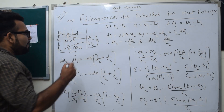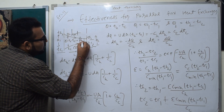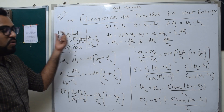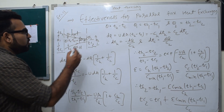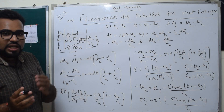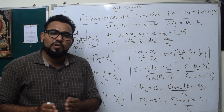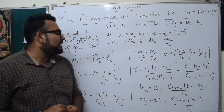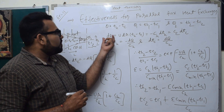We'll consider a small area element dA. The heat transfer through that small area is dQ. We first analyze dQ for this small element, and then we integrate over the whole area from A equals zero to A equals A to find the total heat transfer.